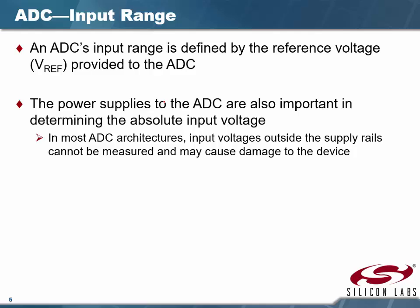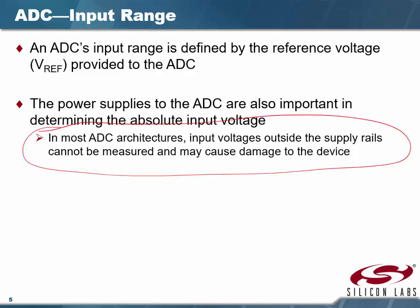The ADC input range is defined by the reference voltage provided to the ADC. We have a choice of multiple pins to use for our reference voltage — that's our full scale. For unipolar operation it goes from zero volts to whatever V-reference is. In most cases with the 8051 we set VDD as V-reference, which is 3.3 volts, but we can supply a different V-reference. The ADC input voltage outside the supply rails cannot be measured and may cause damage.